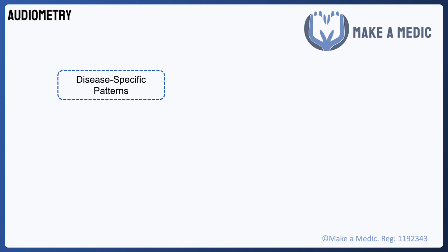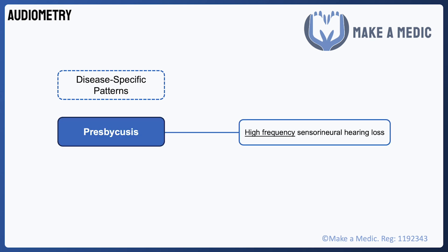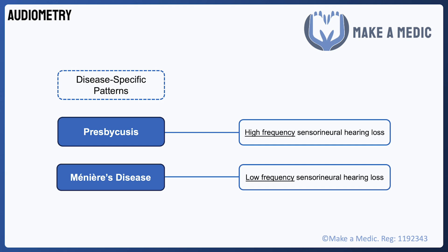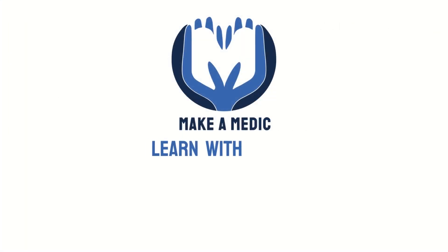As well as distinguishing between the two types of hearing loss, audiograms can also give some clues about the specific cause. For example, sensorineural hearing loss which is worse at higher frequency sounds is suggestive of presbycusis, the age-related impairment, whereas Meniere's disease is characterised by low frequency sensorineural hearing loss. However, the overall clinical picture does need to be considered when interpreting these findings.